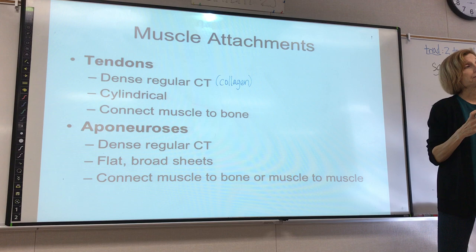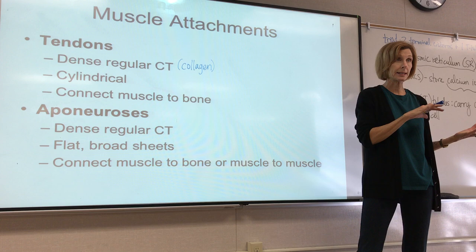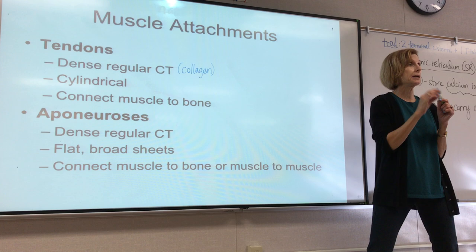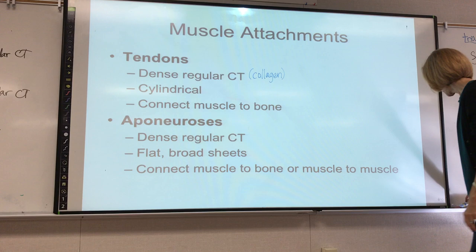There is another, less common type of attachment called an aponeurosis. Aponeuroses are basically like tendons — they can connect muscle to bone, but they can also connect muscle to muscle. Instead of being shaped like a rope, they are flat. It's the same type of tissue — dense regular connective tissue — but they are flat sheets of it.